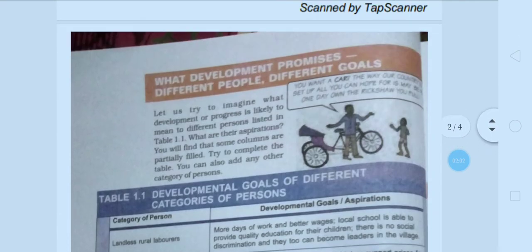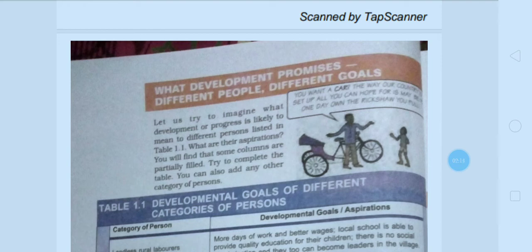Let's start with the meaning of development. What does development promise? Different people have different goals. Development means different things to different people. Development and progress are likely to mean different things to different persons. Development varies from person to person, place to place, country to country.